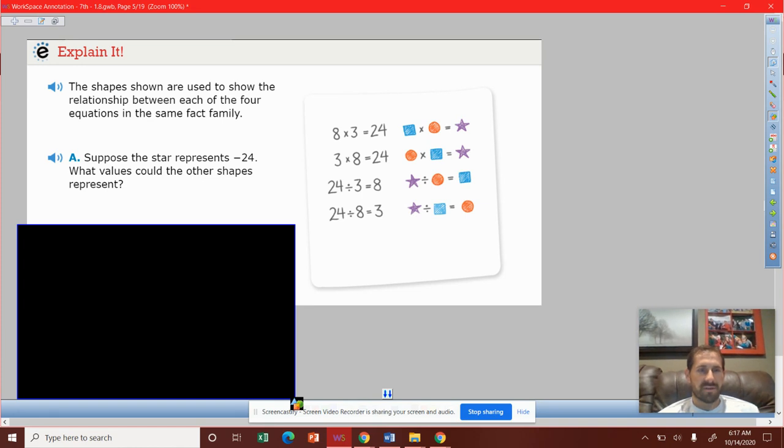Suppose the star represents negative 24. What value could the other shapes represent? The box is 8, the circle is 3. So to get a negative 24, what does that mean?